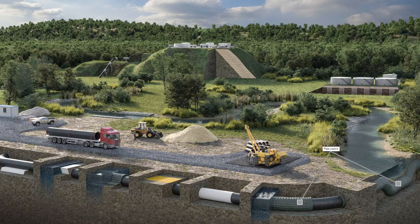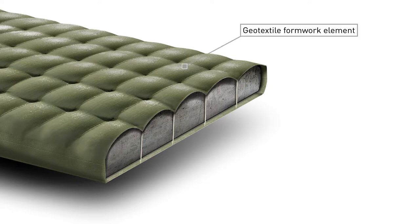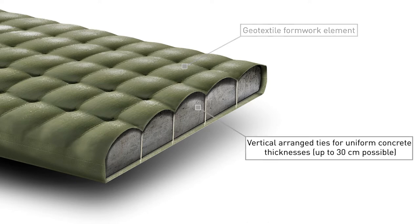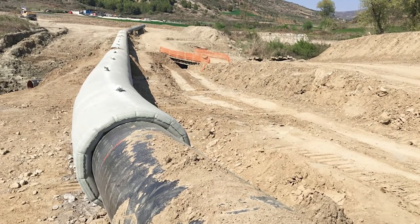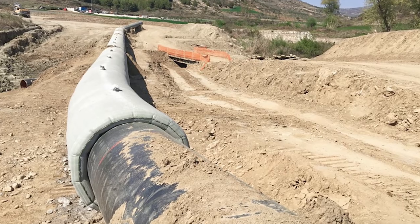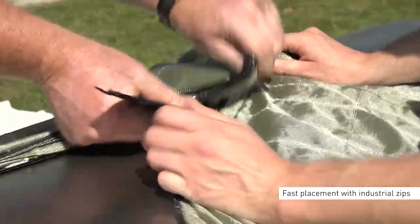The pipe cover is fitted around the full circumference of the pipe before the actual pipeline installation. As an alternative to conventional concrete formwork, a textile concrete mat offers many advantages. The textile formwork system consists of two geotextile layers that are connected to each other at regular intervals by vertically arranged ties. The length of these vertical ties defines the uniform concrete thickness required for buoyancy control or mechanical protection of the pipeline. Supplied in the form of prefabricated panels, the geotextile can simply be placed around the pipeline on the construction site and fastened by closing the industrial zip.